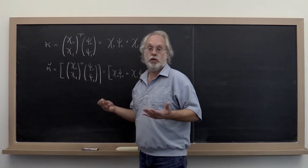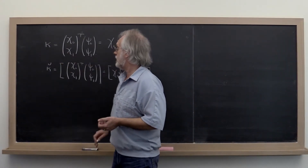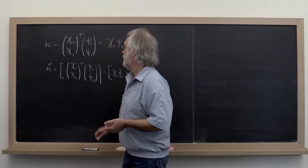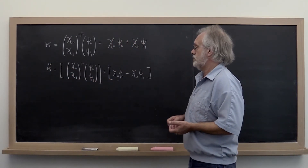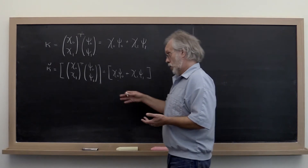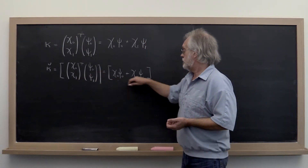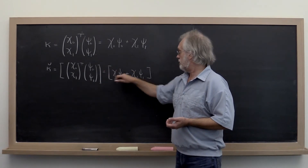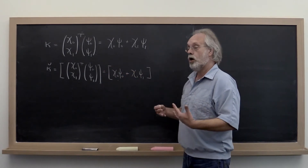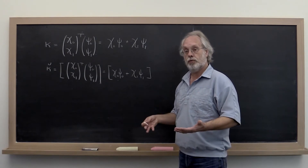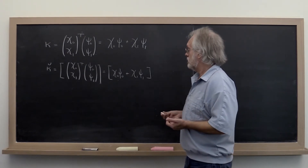Now we know that when we do this on a computer we are not going to get kappa exactly — we're going to get kappa-check. That is going to be the result of performing floating-point computation when we compute our dot product. The notation for that is given by these square brackets.